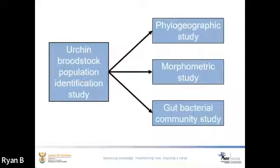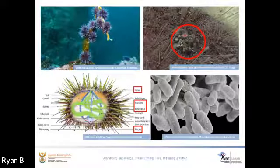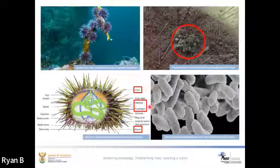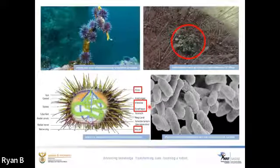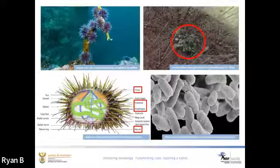Sea urchins belong to the Echinodermata and play a critical role as ecosystem engineers through modifying habitat characteristics and the introduction of nutrient-rich fecal pellets on which fellow rocky shore organisms feed. Their mouth is positioned ventrally, through which algae and biological detritus are taken in, and excreted through the anus at the top of the urchin. The esophagus and gut are of special importance because the optimal functioning of these systems is critical to the health of the host organism. Bacteria in the digestive system can aid or harm the efficiency of nutrient uptake from the bolus, affecting somatic and sexual growth. Analyzing the bacterial community can help inform on population health.